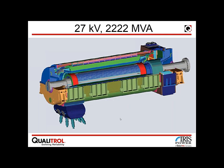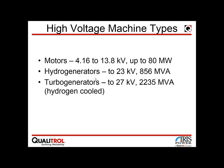The largest turbo generator ready for operation is rated 2222 MVA, while another recently delivered unit is slightly bigger. Two gigawatts of output has been achieved in a turbo generator and about one gigawatt in a hydro generator. The largest motor is 80 MW, and pump storage units can exceed 300 MW in rating.